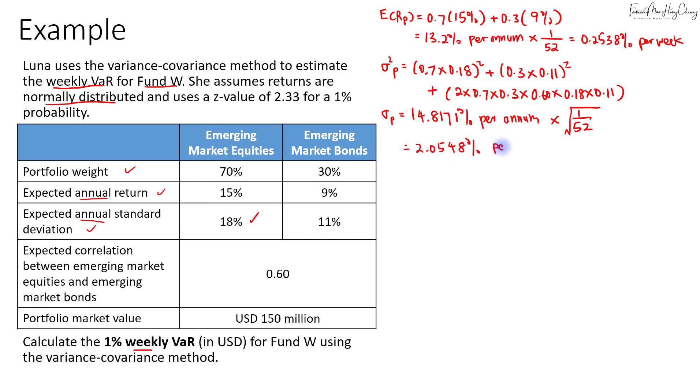Now we are ready to calculate the VaR. The VaR for a 1% weekly period: we'll take the return of the portfolio minus the z-value times the portfolio's standard deviation times the market value of the portfolio, then take the absolute value.